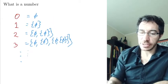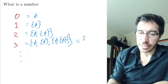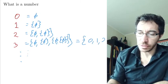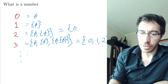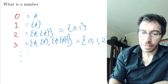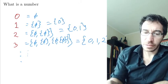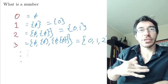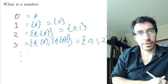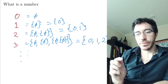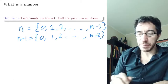So this guy 3 here that we did before is essentially the set {0, 1, 2}, and 2 is the set {0, 1}. This is the set {0}. And the empty set is the empty set because 0 is the empty set — it has nothing below. So those are going to be the numbers for us.